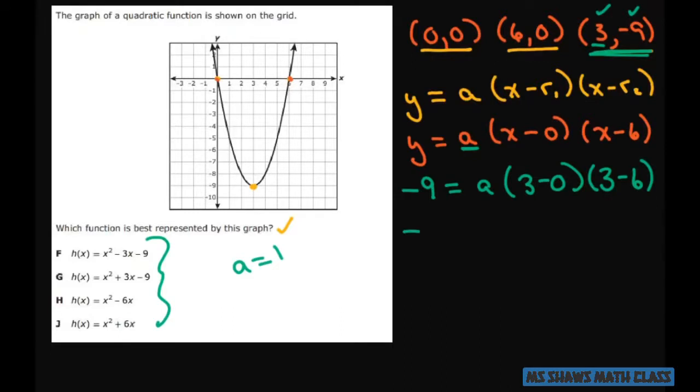So we have negative 9 equals A times 3 times negative 3. So negative 9 equals A times negative 9. Divide both sides by negative 9 and you get A equals 1, which is what we thought.